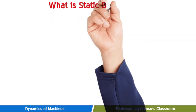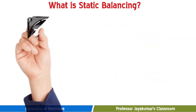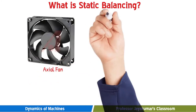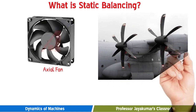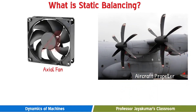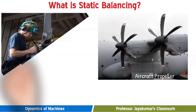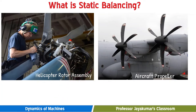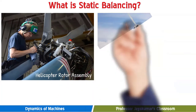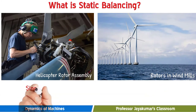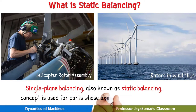What is static balancing? Static balancing is also known as single plane balancing. A system of rotating masses is said to be in static balance if the combined mass center of the system lies on the axis of rotation. Take these practical examples: axial fan, aircraft propeller, helicopter rotor assembly, and rotors in windmills. In all these applications, we have several rotating masses rotating in the same plane.